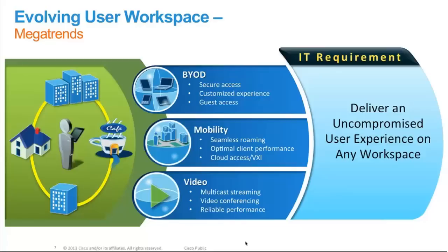The second megatrend is guest access. A lot of guests come into your organization or enterprise network and would like to have internet access. When people bring in their own devices, they'd like to be mobile — they want seamless roaming across the enterprise network, seamless access, and performance over those devices.